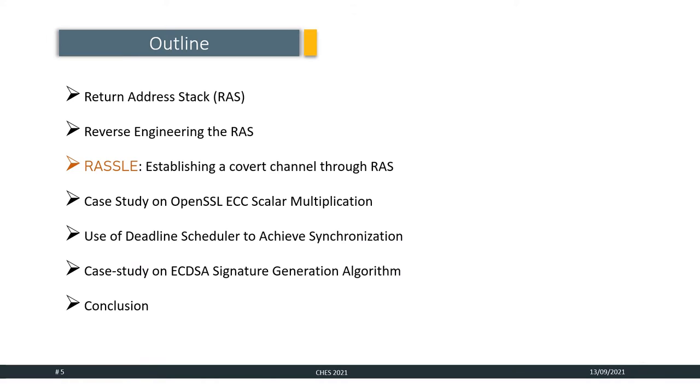Here is the outline for our talk. First, we will discuss about the return address stack or RAS. Then, we will see how to reverse engineer the RAS for undocumented processors. We propose a novel attack RASL by establishing a covert channel through RAS. Then, we move on to the case study on OpenSSL ECC scalar multiplication and we will see how to use Deadline Scheduler to achieve synchronization. Finally, we see a case study on ECDSA signature generation algorithm.